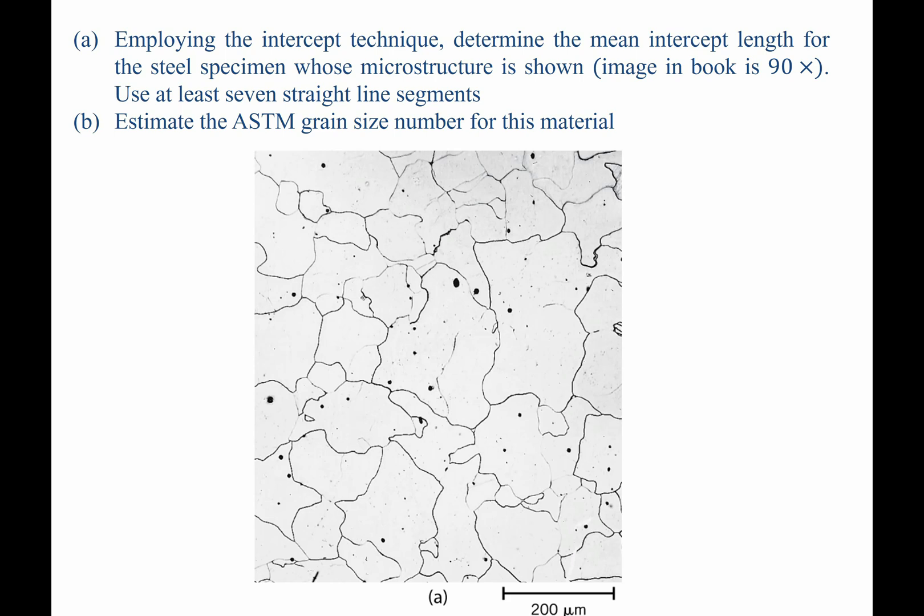Determining grain size is extremely important in material science. Nowadays many instruments are digital and the measurement of grain size is trivial. However, in many instances we are looking at images that were taken before this era and are simply photomicrographs from optical microscopes, such as the one shown here. For this image, this question asks us to employ the intercept technique to determine the mean intercept length and therefore the grain size, for this steel specimen whose microstructure is shown.